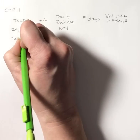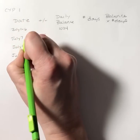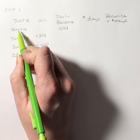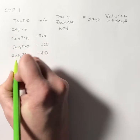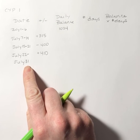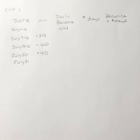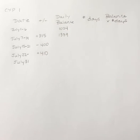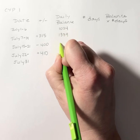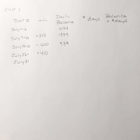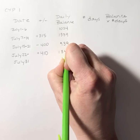Now I'm going to go back and look at these dates. July 1st goes through the 6th, July 7th goes through the 14th, July 15th goes through the 21st, and July 22nd goes through July 31st — since there are 31 days in July. My daily balance started at $1,024, then I charged an additional $315, so my daily balance is $1,339. Then I made a $400 payment, so I subtract $400 and my daily balance is $939. Then I made another charge of $410, so my daily balance is $1,349.